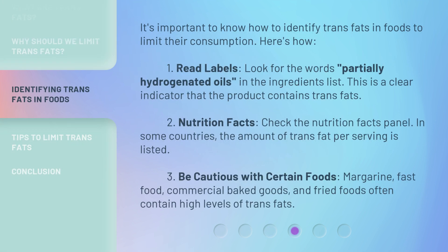It's important to know how to identify trans fats in foods to limit their consumption. Here's how. First, read labels: look for the words partially hydrogenated oils in the ingredients list — this is a clear indicator that the product contains trans fats. Second, check the nutrition facts panel. In some countries, the amount of trans fat per serving is listed.